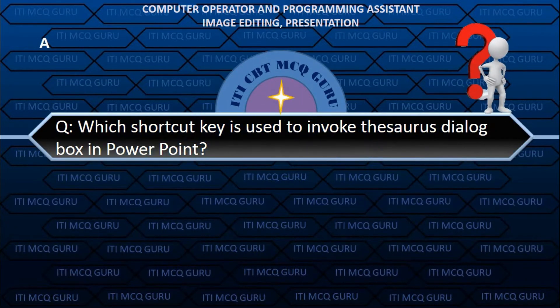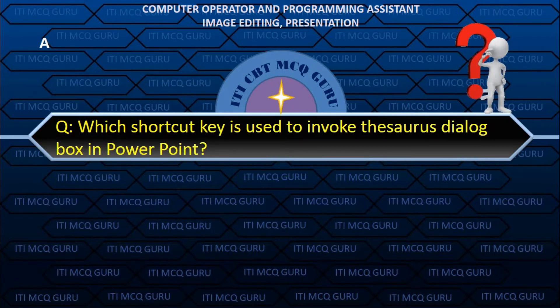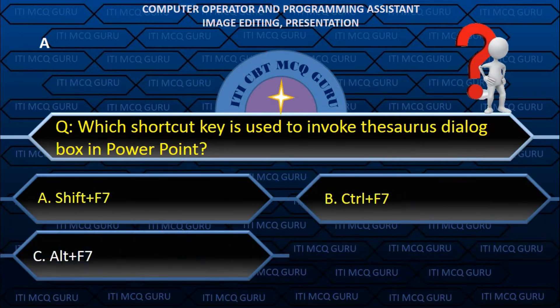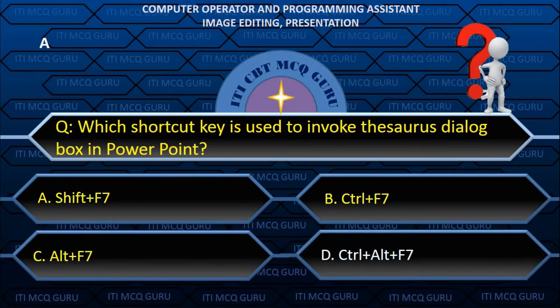Which shortcut key is used to invoke the Thesaurus dialog box in PowerPoint? A. Shift plus F7.